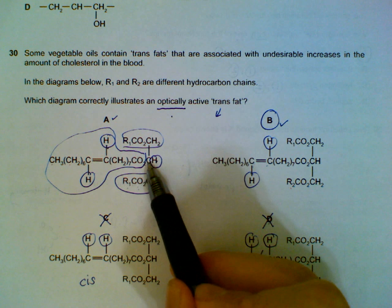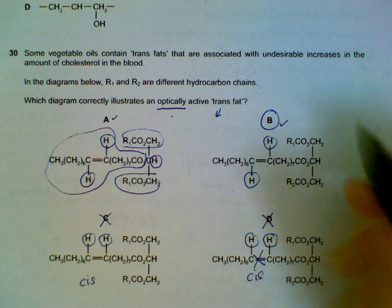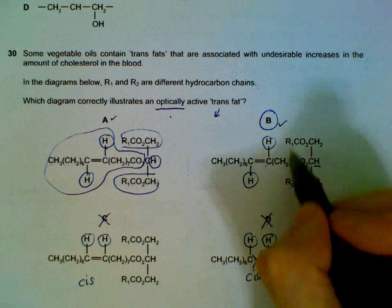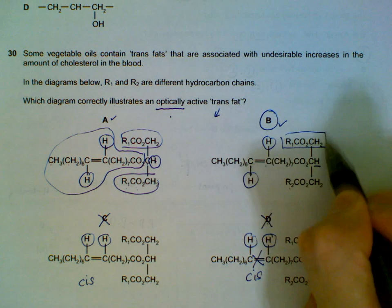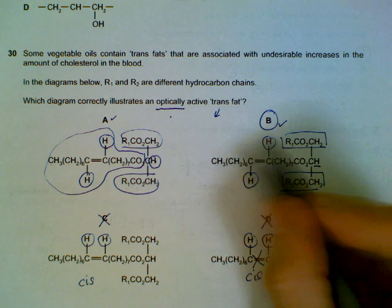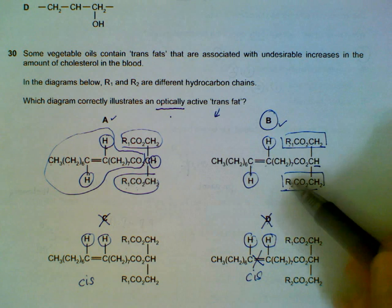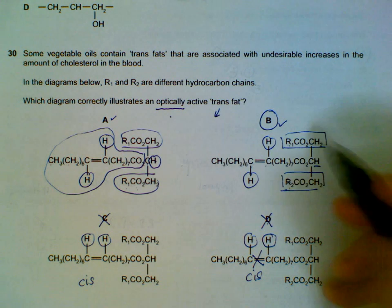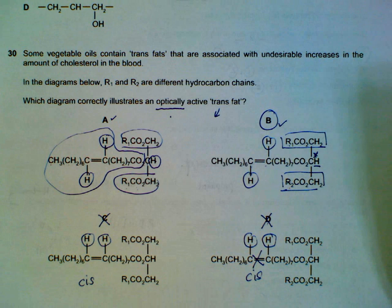But if you look at B, this carbon is one group, two groups, three groups, four groups here. Importantly, these two groups are not the same because this is R1, this is R2, so it's chiral here - optically active molecule.